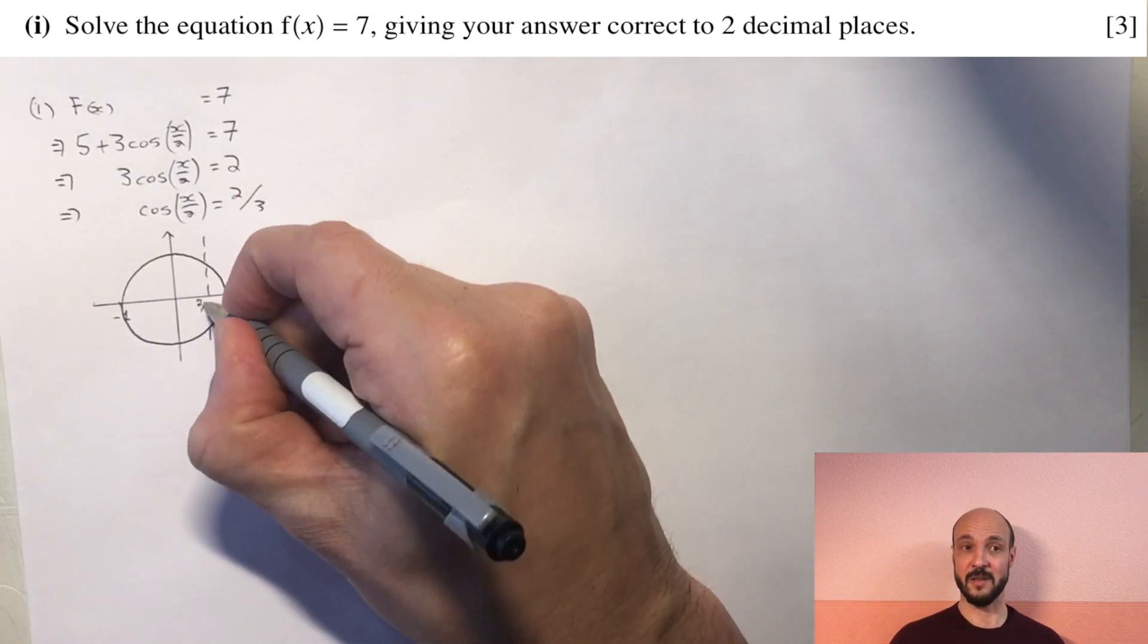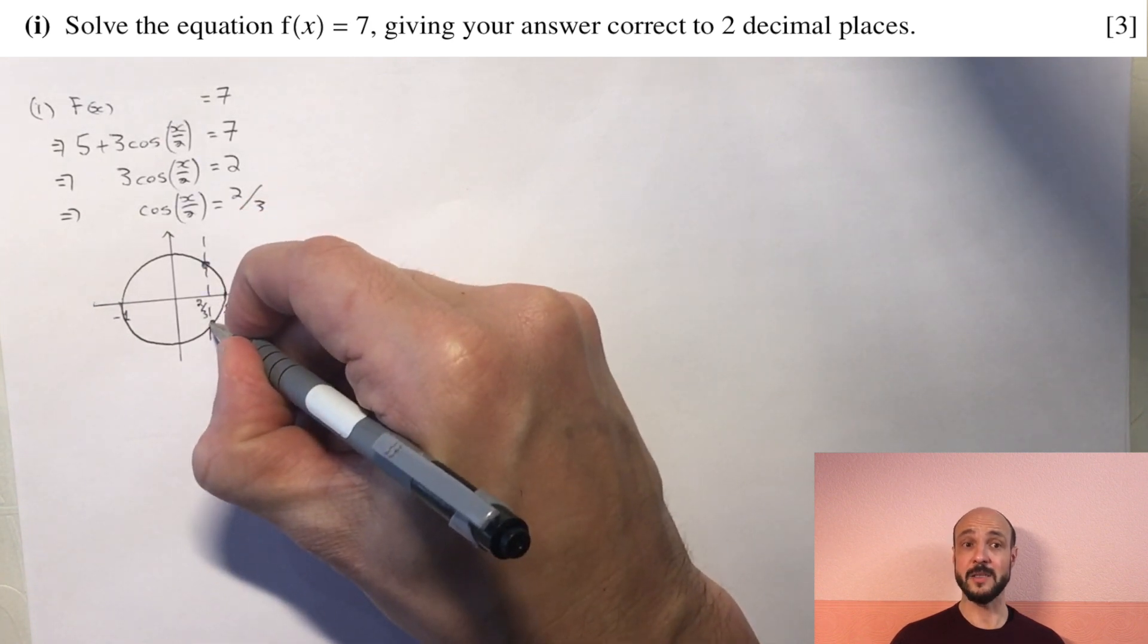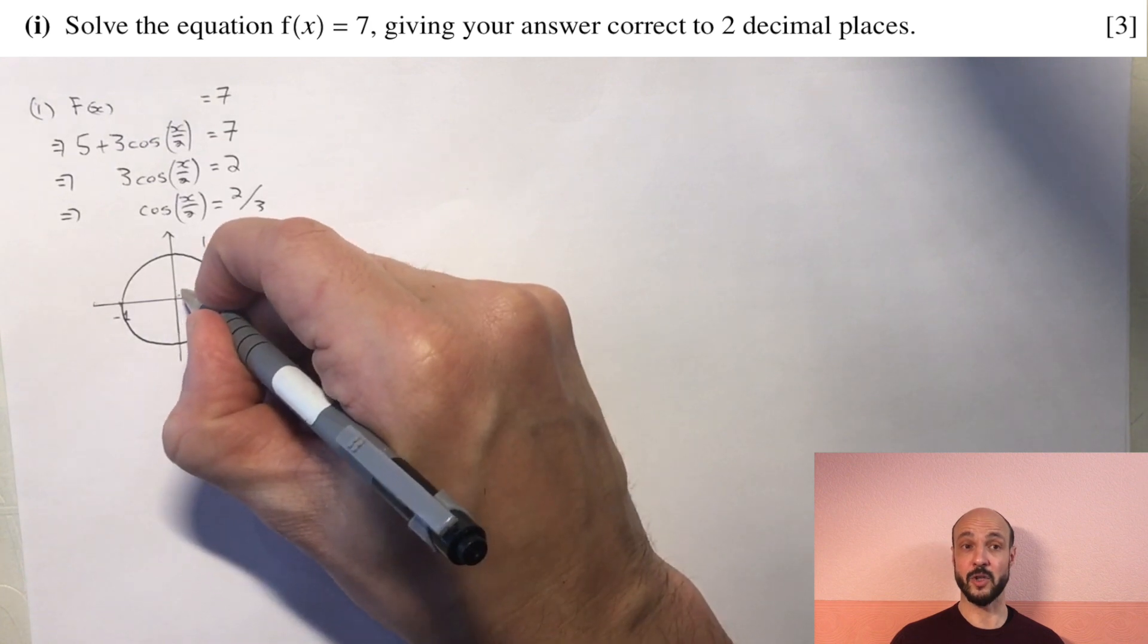A vertical line, and the two points where that crosses the circle, these are going to be our values of x over 2.